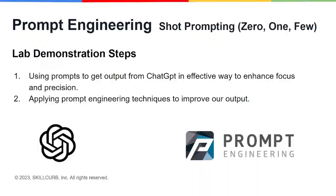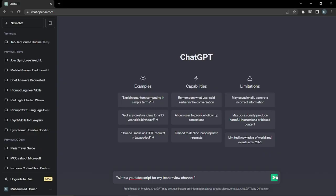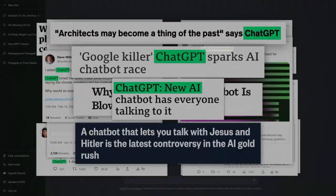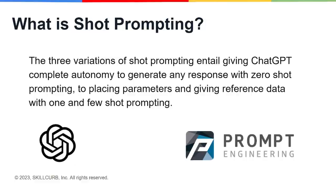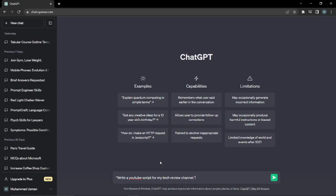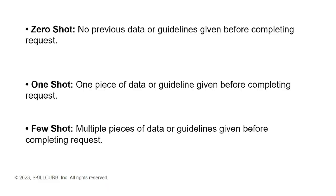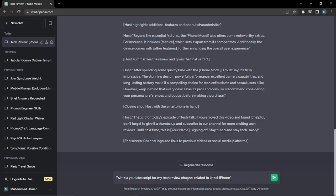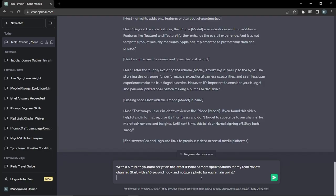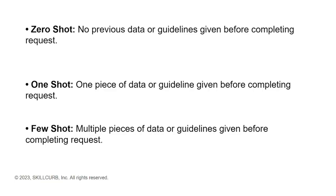Shot prompting basically has three variations. Zero shot prompting gives ChatGPT complete autonomy to generate any response. One and few shot prompting let you place parameters and give reference data. In zero shot prompting you don't give any previous data or guidelines before completing requests — you go straight into your prompt without any extra information. In one shot prompting you're only allowed to give one piece of data or guideline, and in few shot prompting you can add multiple pieces of data or guidelines to complete your request.